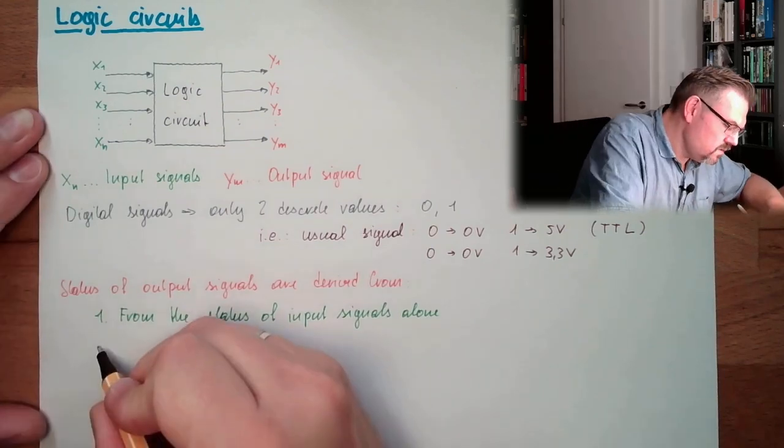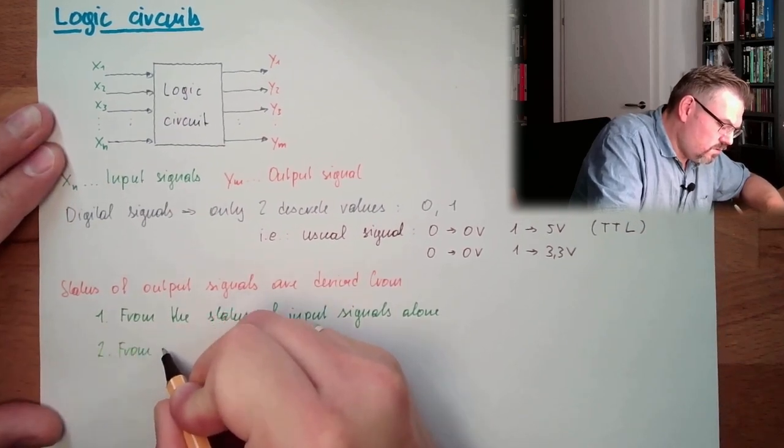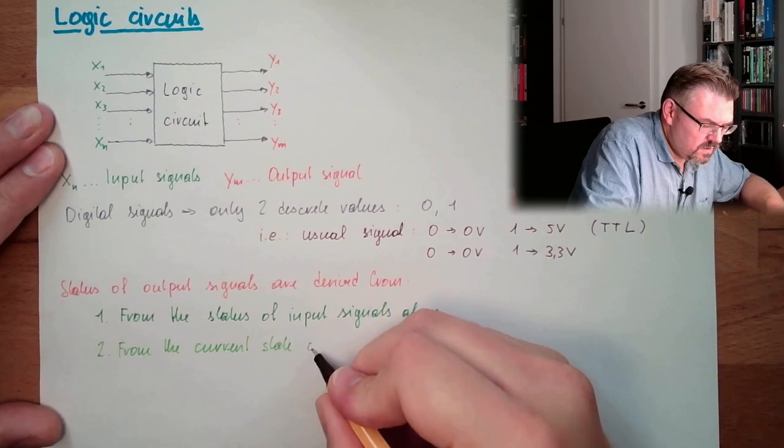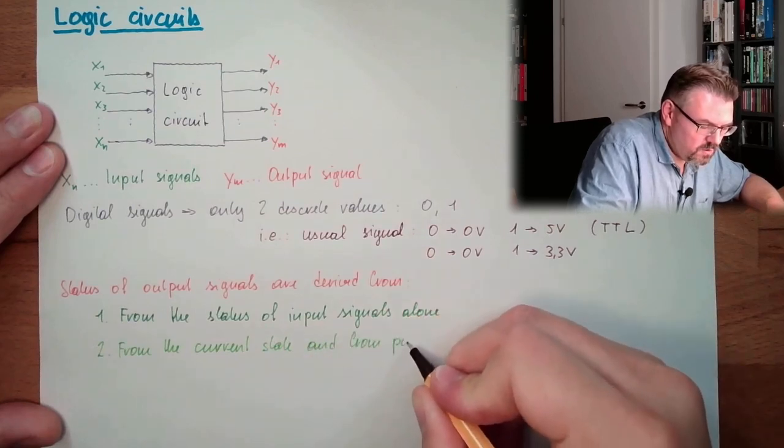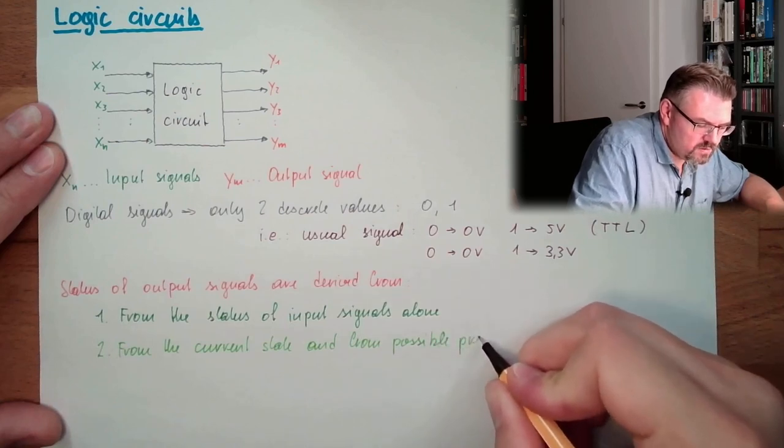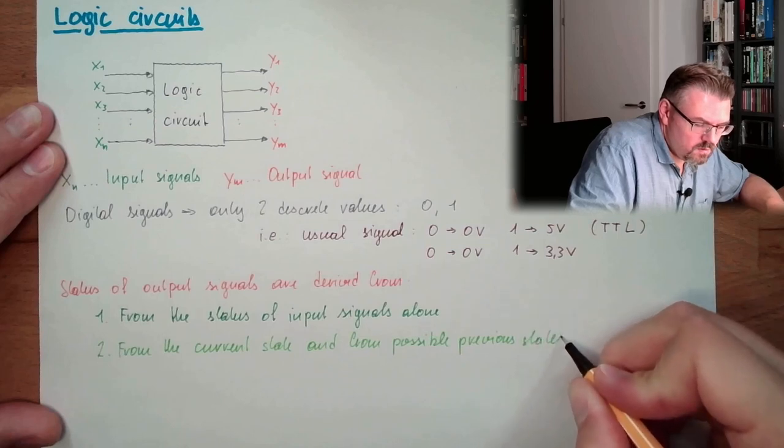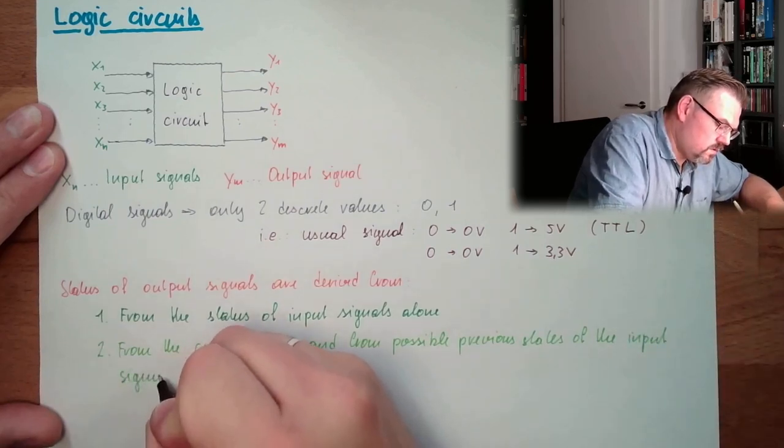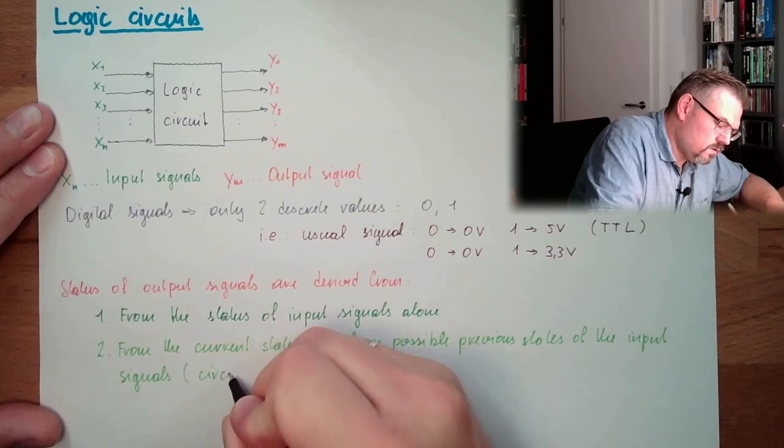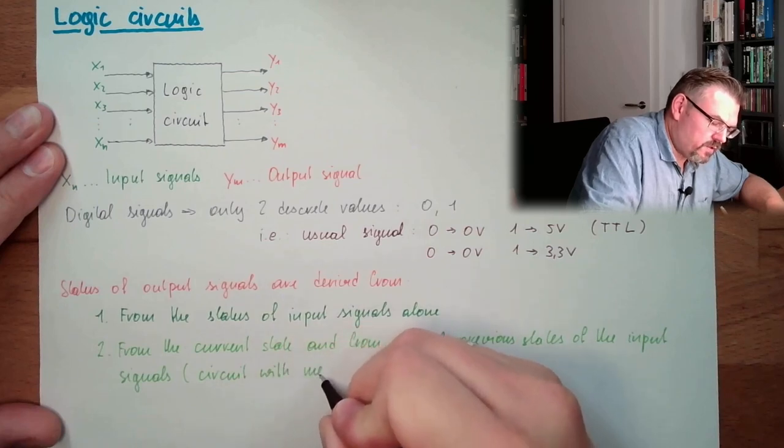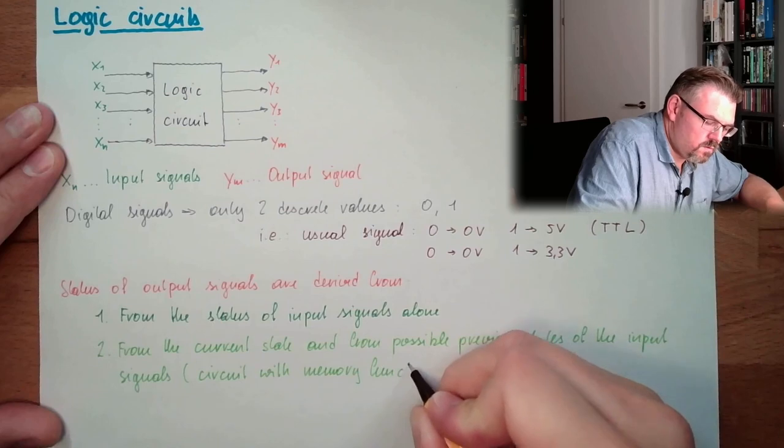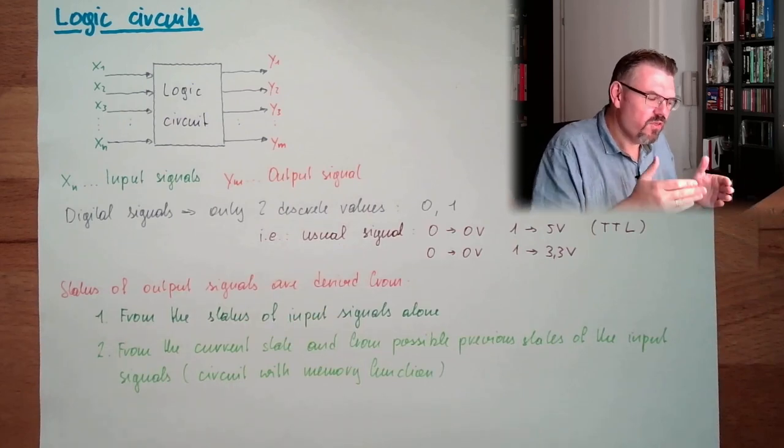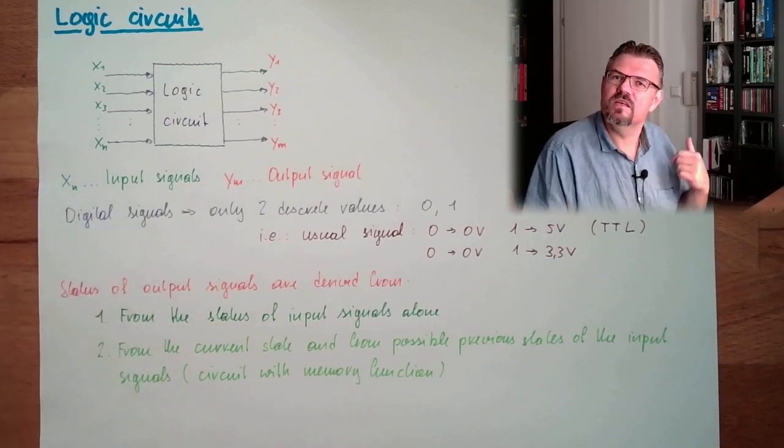Second possibility. So the output signals are derived from the current state and from possible previous states of the input signals. This is a circuit with memory function. So somehow, the previous states of the input signals might already have some influence on the output signal. Not just the current state, but also the history of the signals.